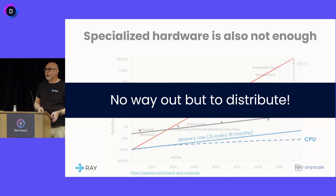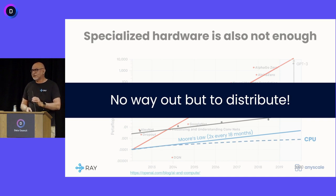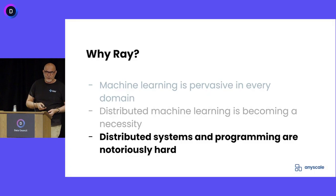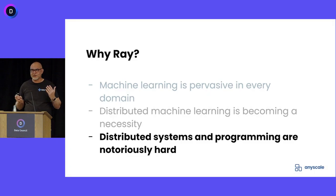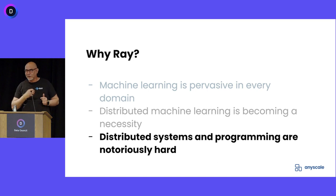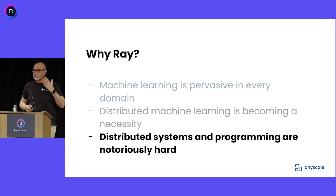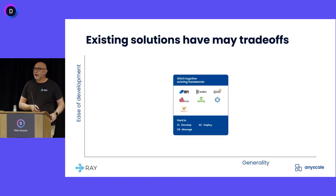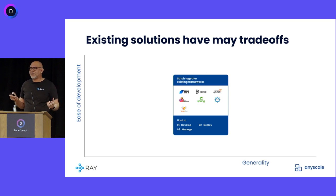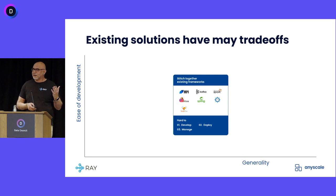The third trend: distributed computing is not easy. If you're actually building systems, it's not very easy to program. There are trade-offs when you think about how you build these systems. If you look at existing solutions — people work on distributed systems, build them, deploy, manage, and monitor them. For streaming they might use Spark, for data processing Flink or another tool. The problem is that these are disparate tools — they have distributed communication protocols, they use different languages. Stringing them together can be quite a cumbersome task.